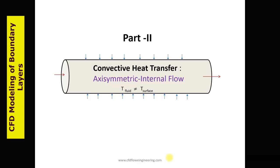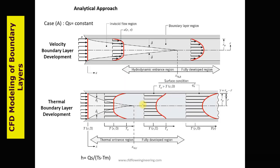Previously we discussed external flow. In this lecture, we learn convective heat transfer for axisymmetric internal flow. For convective heat transfer, the temperature of the fluid is different from the surface temperature. Similar to external flow, here we have to understand the velocity boundary layer and thermal boundary layer inside the pipe. Delta is the thickness of the velocity boundary layer, and delta-T is the thickness of the thermal boundary layer. You can see the velocity profile and how it changes across the length, and by knowing the velocity and temperature we can find the heat transfer coefficient, equal to heat flux divided by surface temperature minus bulk mean temperature.